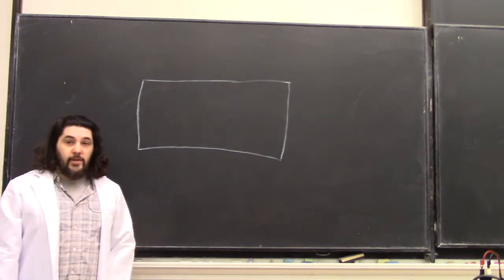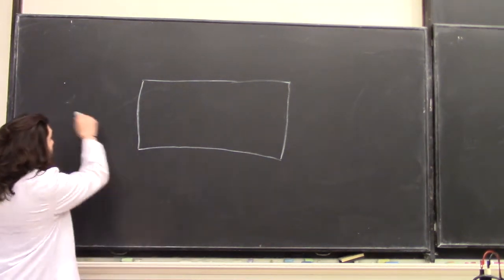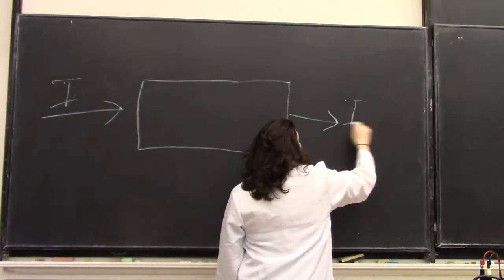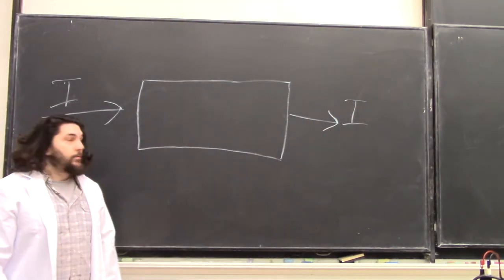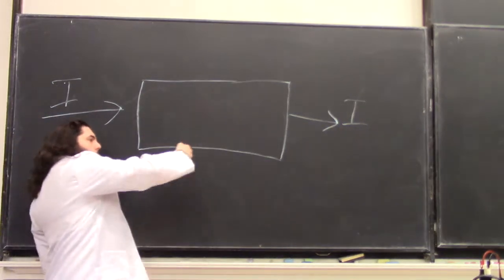If I have a big chunk of material that I'm sending a current through, and I impose a magnetic field on it, let's say the field is pointed into the board.